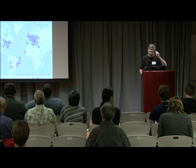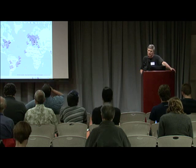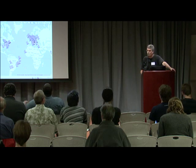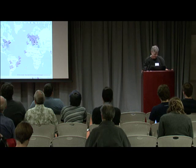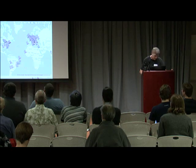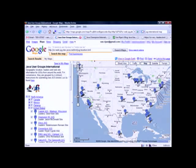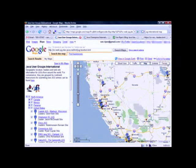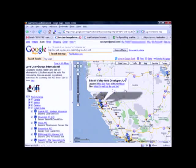We did both Java user groups and Java champions. There's a map of the world done in KML that you can view in Google Maps — you can zoom into North America, into the United States, and see your local JUGs. There are links to the blogs of the various JUG leaders as well as their sites, and there's also a Java Champions map.